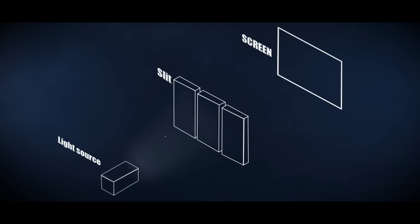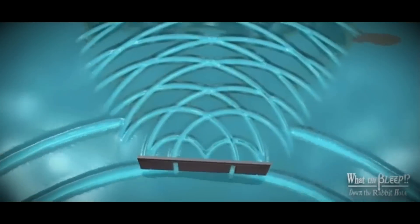That's why after passing through the two slits, they create a striped pattern on the back screen. This pattern is the result of light waves interfering with each other as they pass through the two slits.